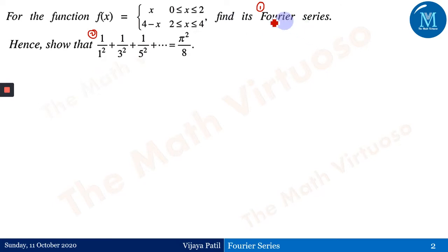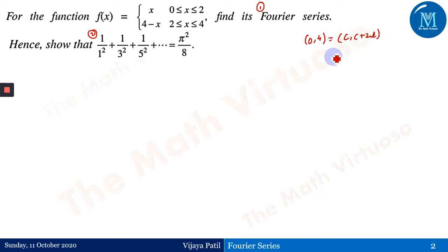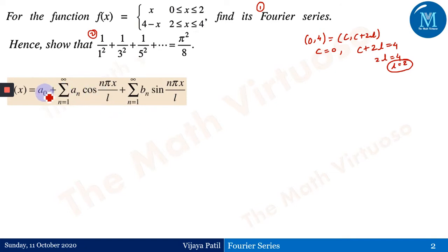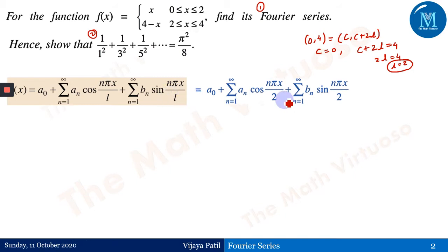The range is divided into two parts, 0 to 2 and 2 to 4, but we consider the entire range 0 to 4. Comparing this with c to c+2L, we get c=0, c+2L=4, so 2L=4 and L=2. Therefore f(x) = a₀ + Σ aₙ cos(nπx/2) + Σ bₙ sin(nπx/2), replacing L=2 in the general formula.